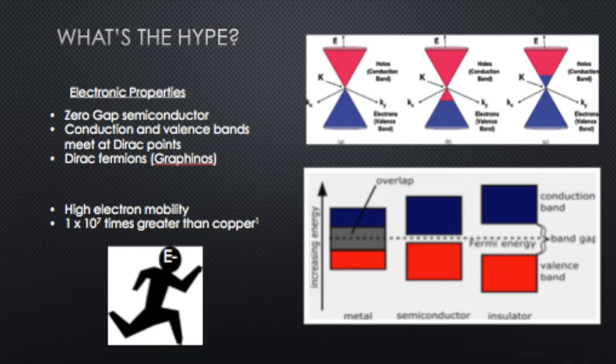So what's the hype surrounding graphene? Why is it so interesting? Why are scientists, researchers, and engineers all losing their minds about this molecule? First off, it has a lot of interesting electronic properties. First, it's a zero-gap semiconductor. Taking a look at the image on the bottom right...